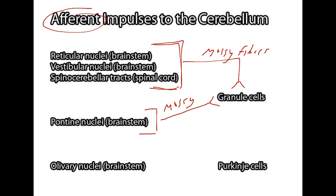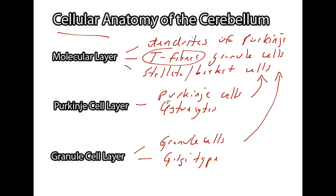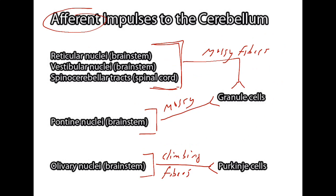The olivary nuclei in the brainstem connect to Purkinje cells on the opposite side of the cerebellum via connections known as climbing fibers. So, the granular cell layer sends axons toward the dendrites of Purkinje cells in the molecular layer. All of this information — from granular cells to Purkinje cells — is excitatory.